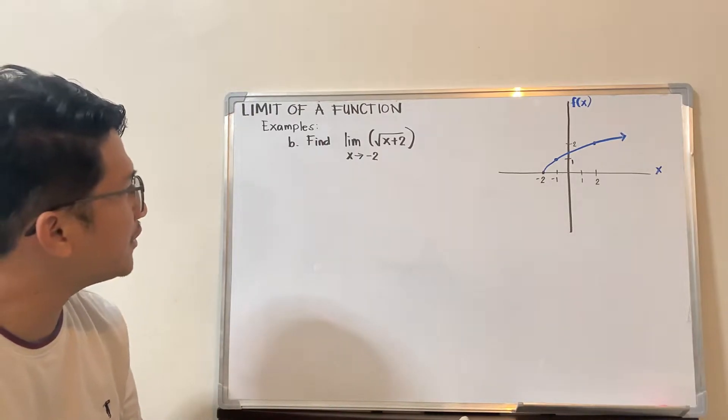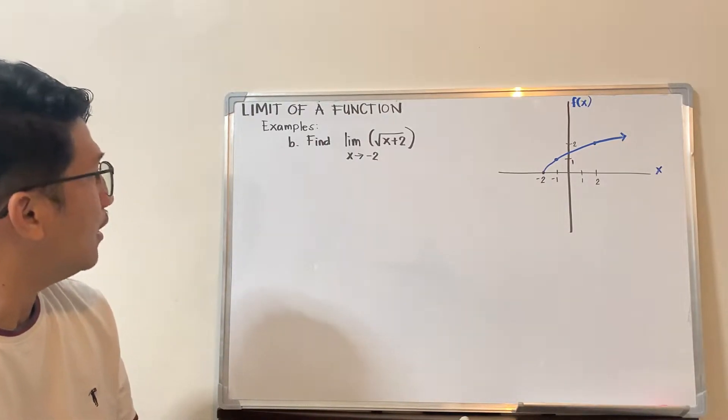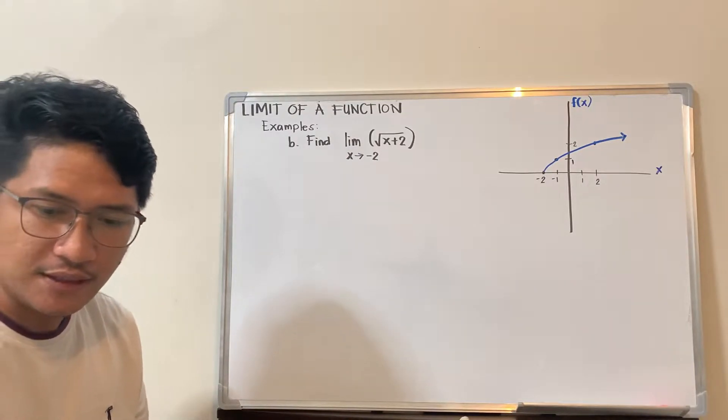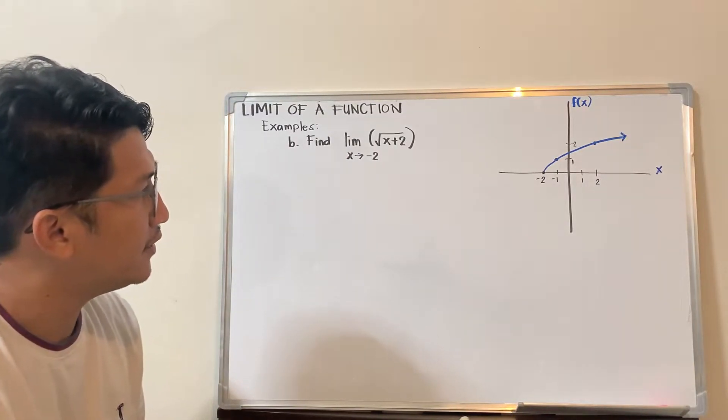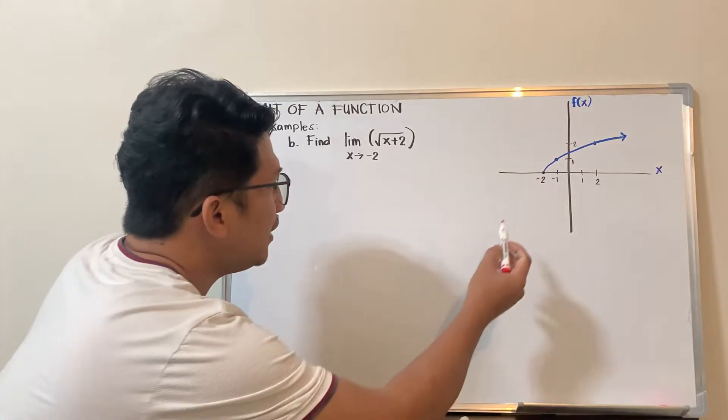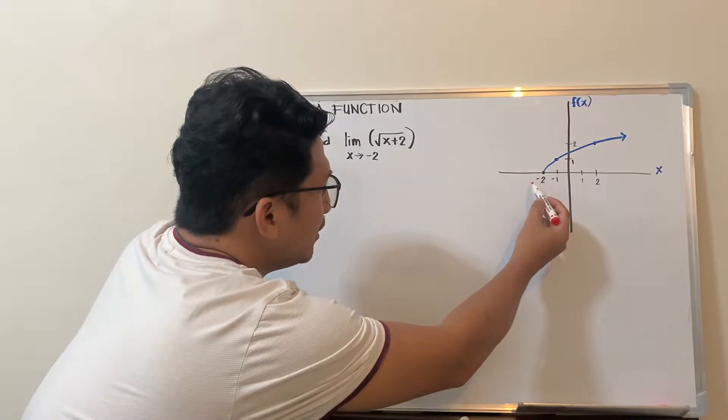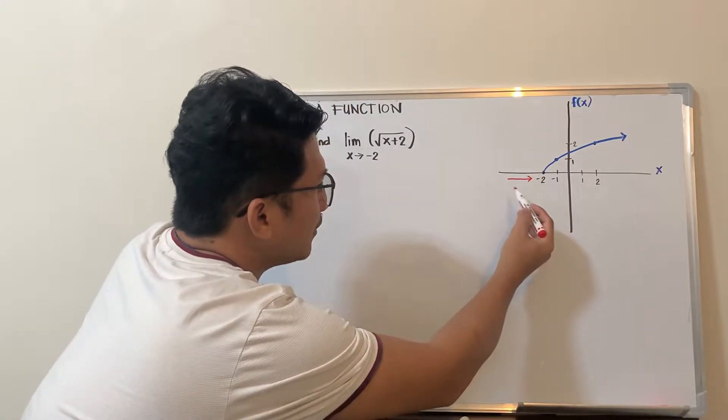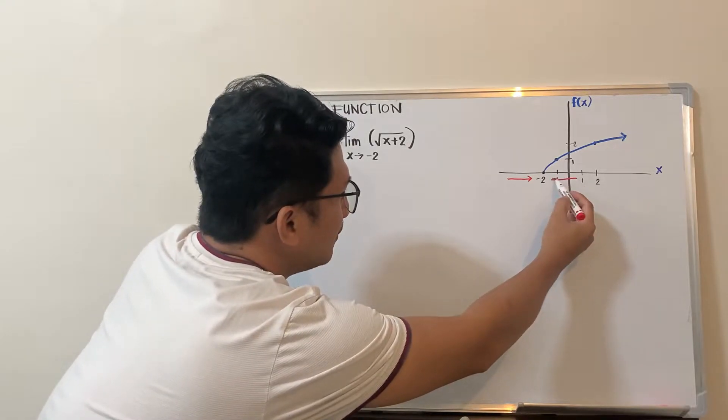You actually have a graph there on the right side. We will try to evaluate the limit from the left and the limit from the right. We are approaching negative 2, so this is the value of a here. We are trying to approach the value of x to negative 2 from the left and also from the right.